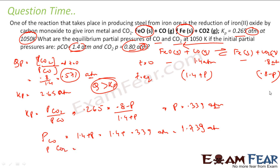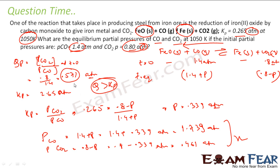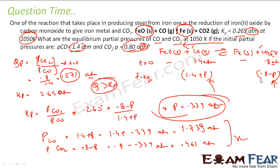Similarly, the partial pressure of CO₂ is 0.8 minus P, which is 0.8 minus 0.339, giving 0.461 atm. So QP was greater than Kp, meaning the reaction proceeded in the backward direction. CO₂ pressure decreased by P and CO pressure increased by P, since both have the same stoichiometric coefficient. Using Kp = (pressure of CO₂)/(pressure of CO), we can find the equilibrium partial pressures.